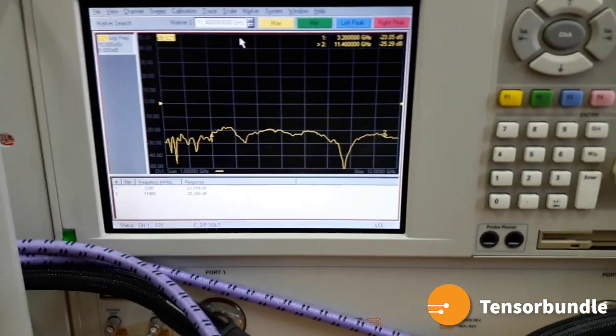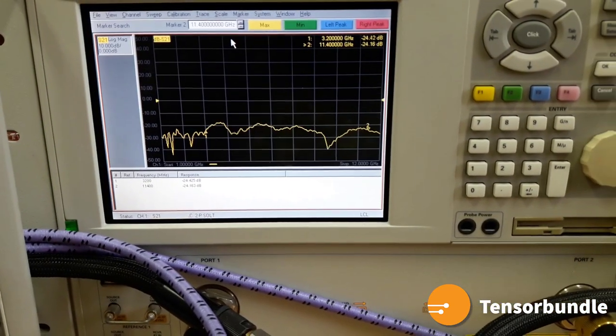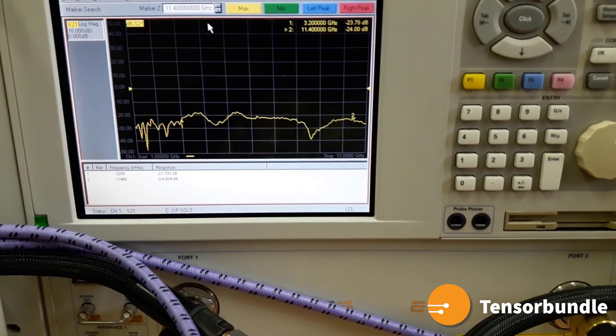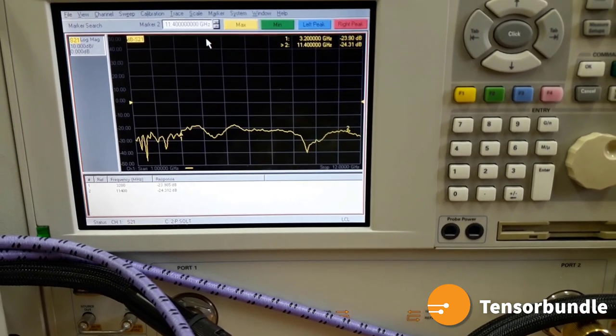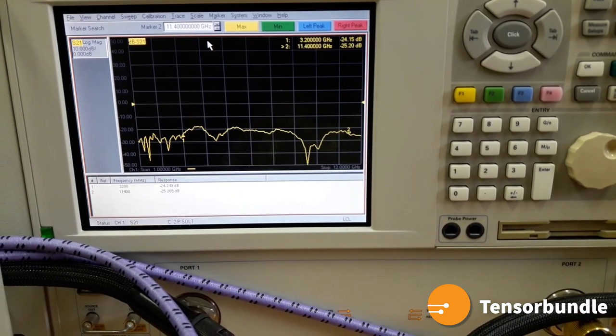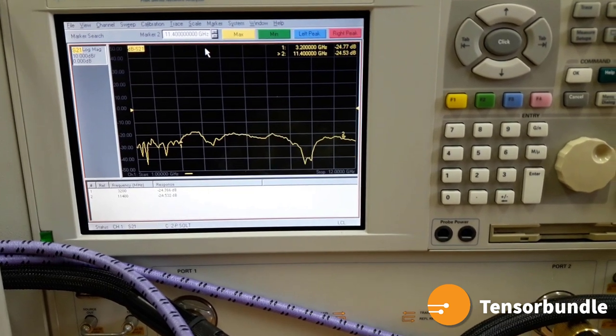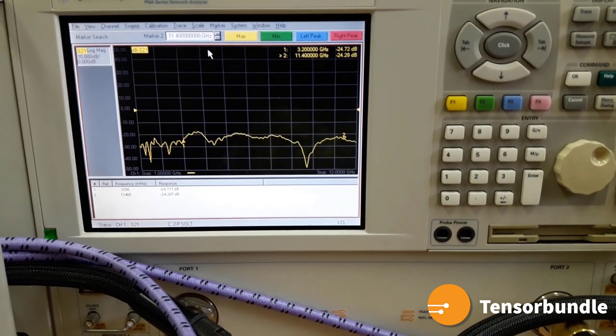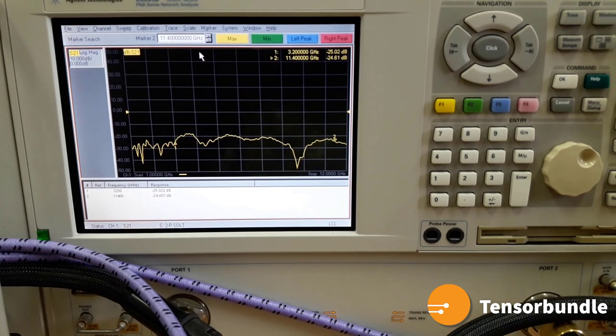What you can see in the screen is basically one of those Sij terms that we just saw in this matrix. So depending upon the port number that you connected to the VNA, it will give you that corresponding mutual coupling between those two ports.